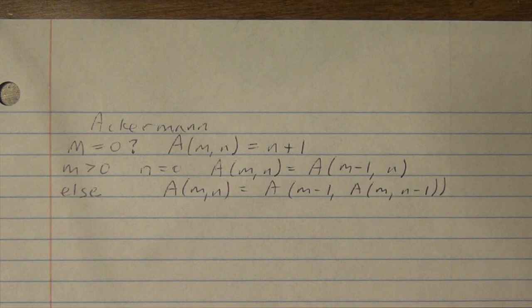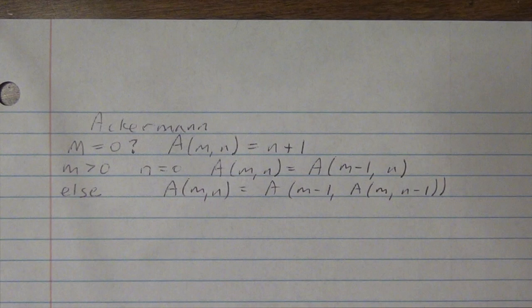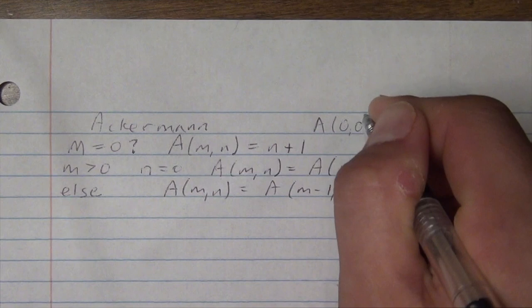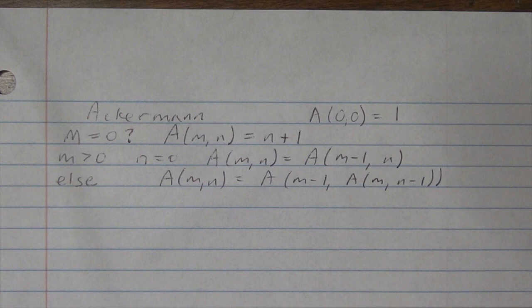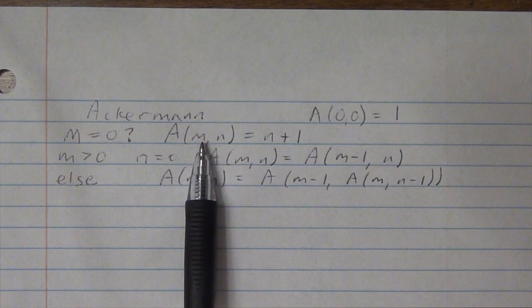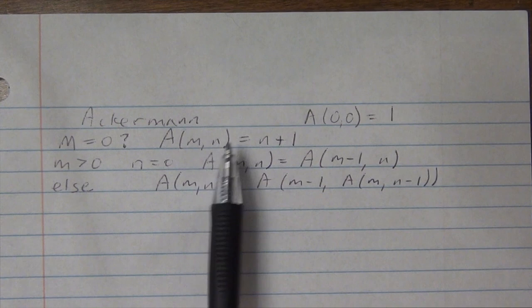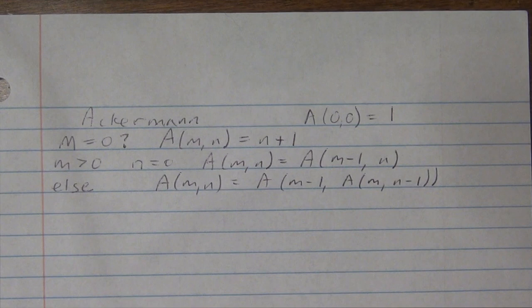You start off with the function. The base case: Ackerman of zero zero is just one. So if you have A(0, 0), that's equal to one. If the first number is zero, you get n plus one — so zero plus one is one. You have a whole array of base cases there.